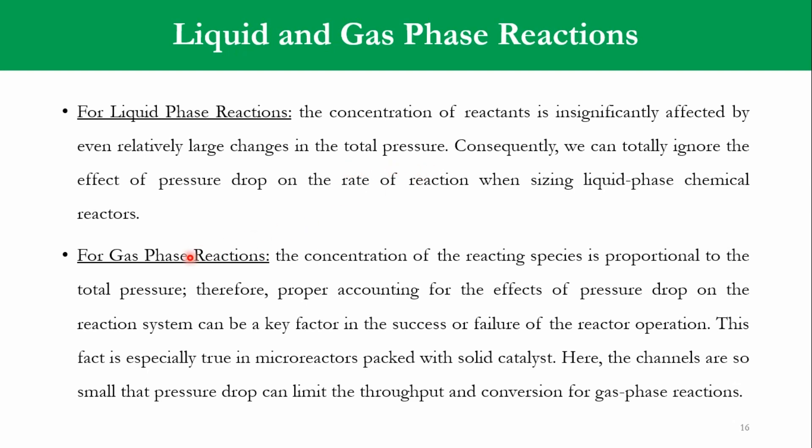But once we are talking about the gas phase reaction, the concentration of the reactant species is proportional to the total pressure. So accordingly, we must always have to take the effect of pressure drop while we are making any calculations related to the design, because if we do not take the pressure drop considerations, accordingly we are moving towards the failure of the reactor operation. Therefore, proper accounting for the effects of pressure drop on the reaction system can be our key factor in the success or failure of the reactor operation.